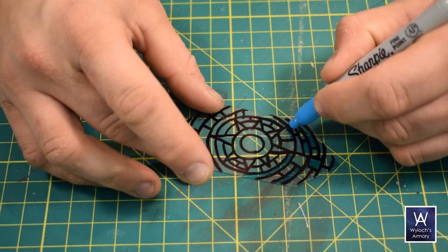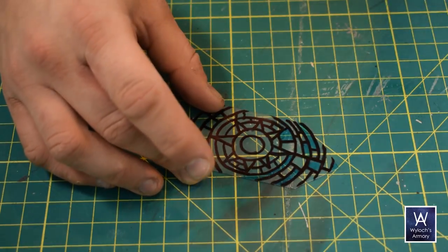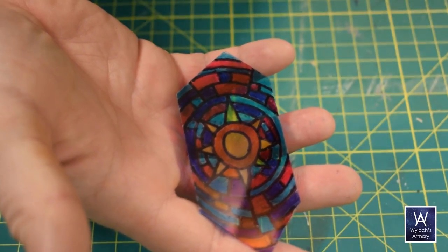Then use colored Sharpies and just color in between the lines. Again, do this on both sides. It's really that simple.